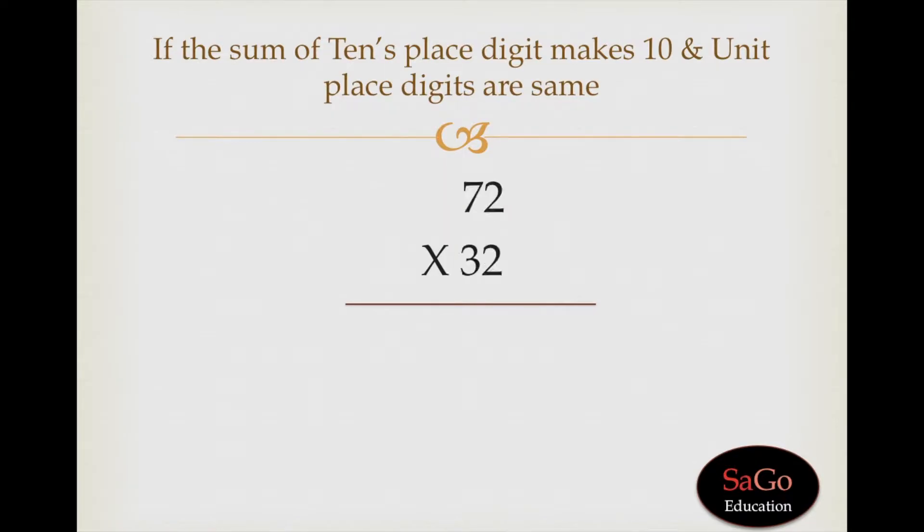Let's take another sum. Here we'll multiply 7 into 3 and add 2 in it, so 7 into 3 plus 2 makes 23. Write down 23. Now multiply ones places with each other, so 2 into 2 it will come 4.